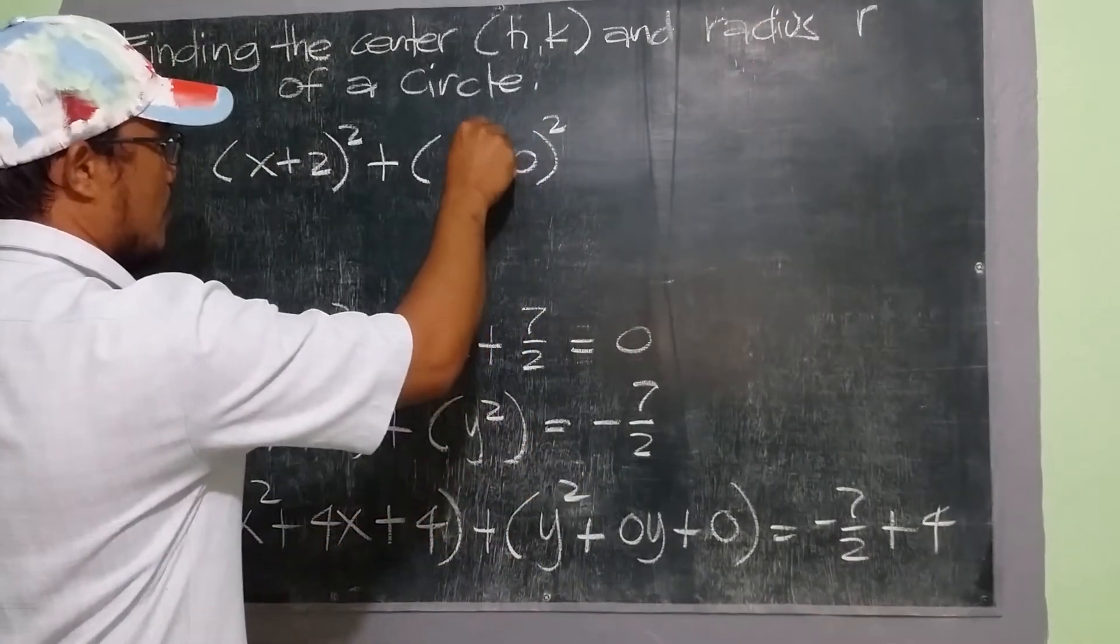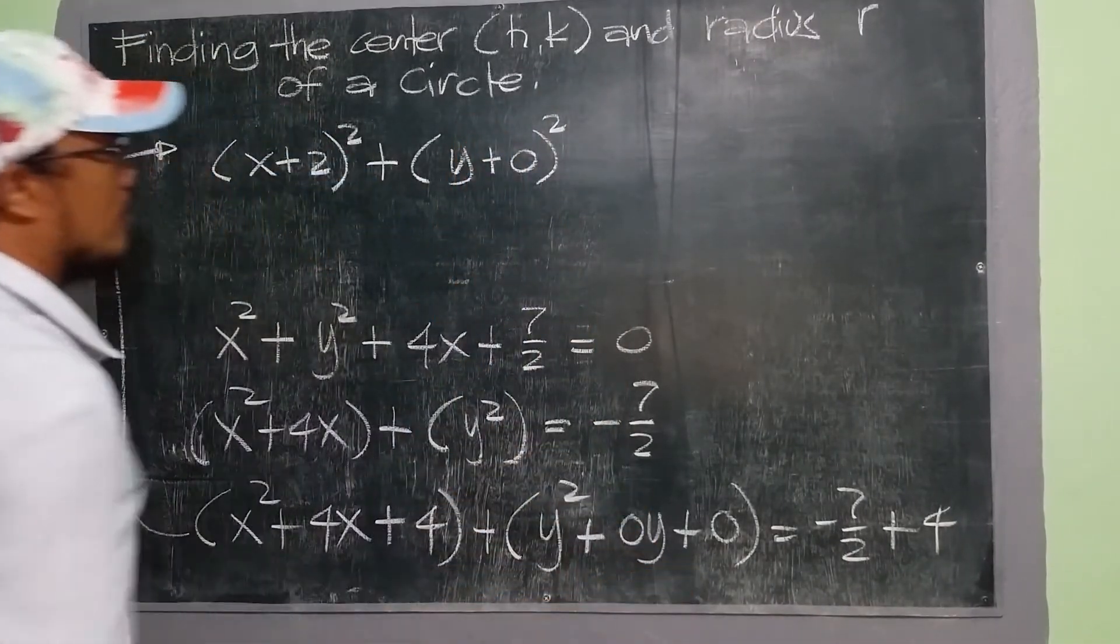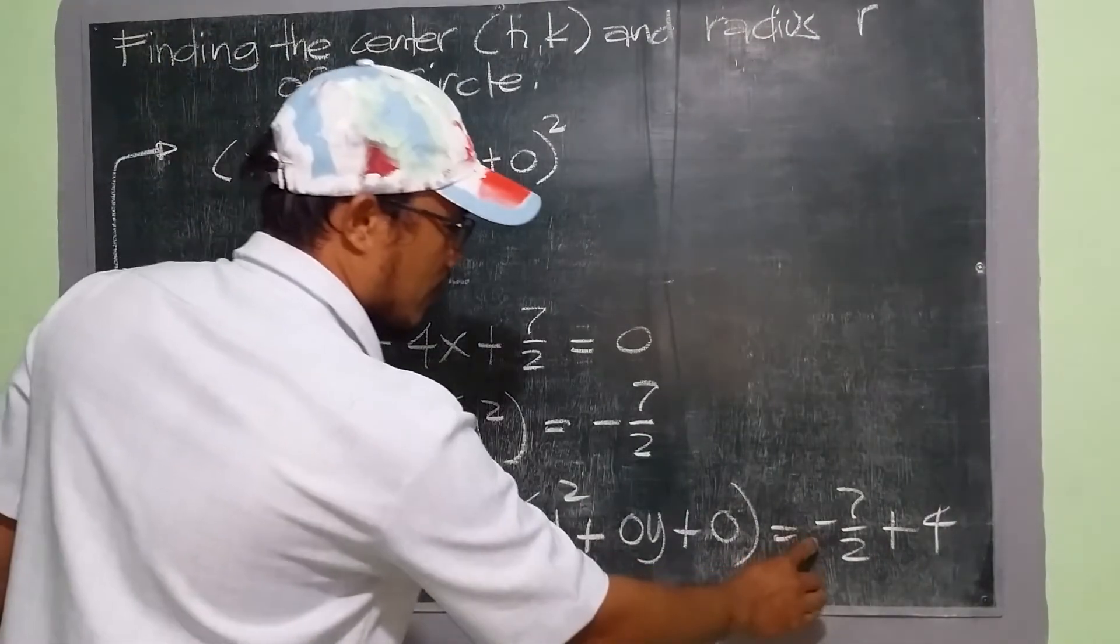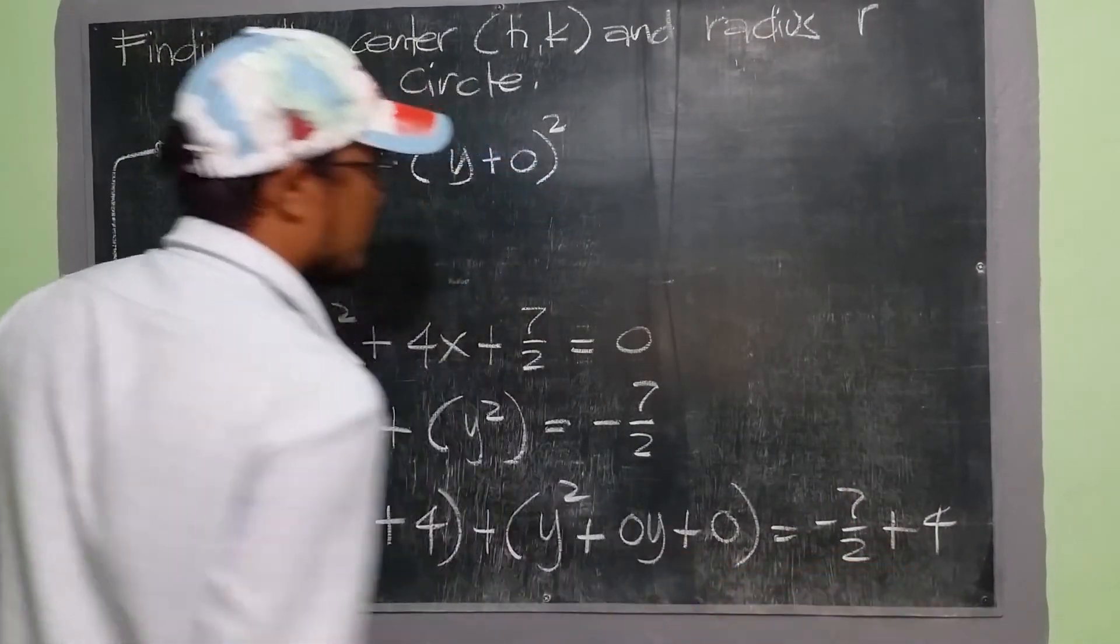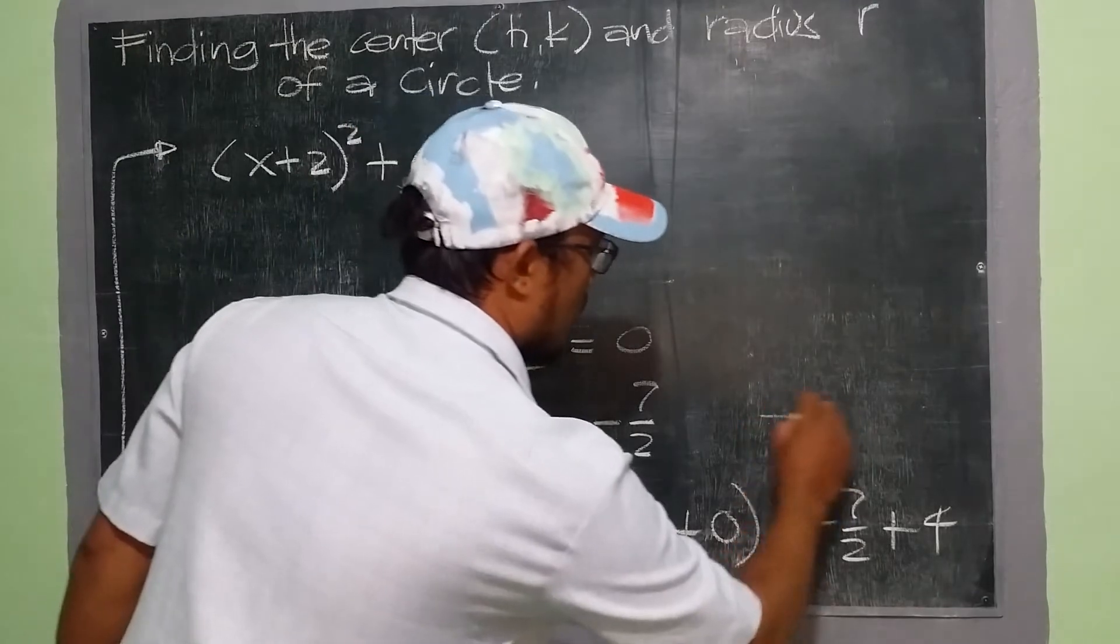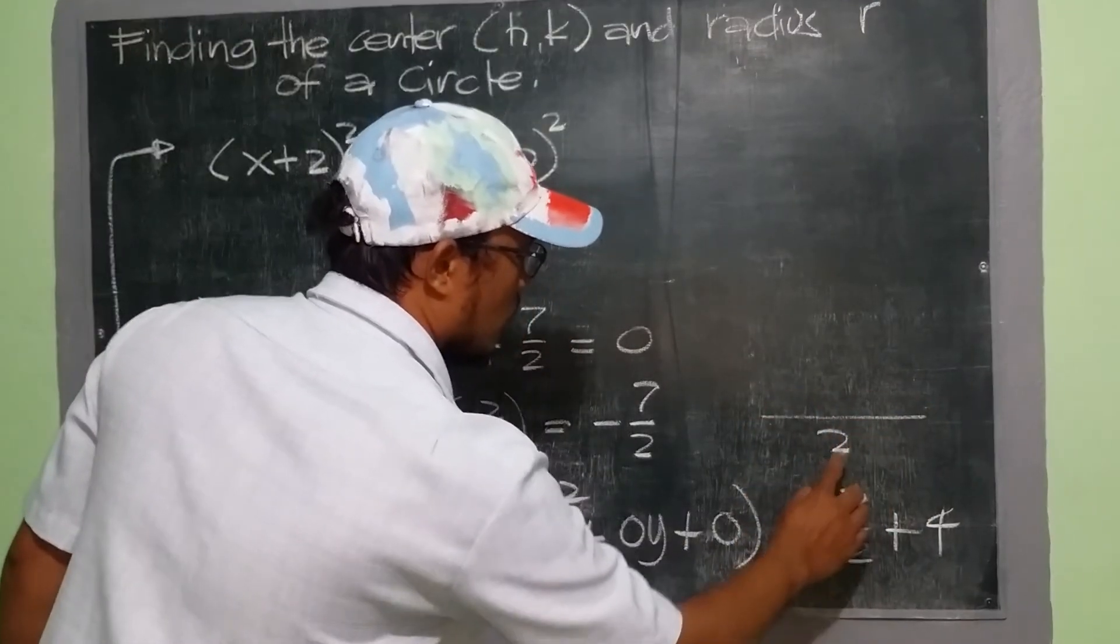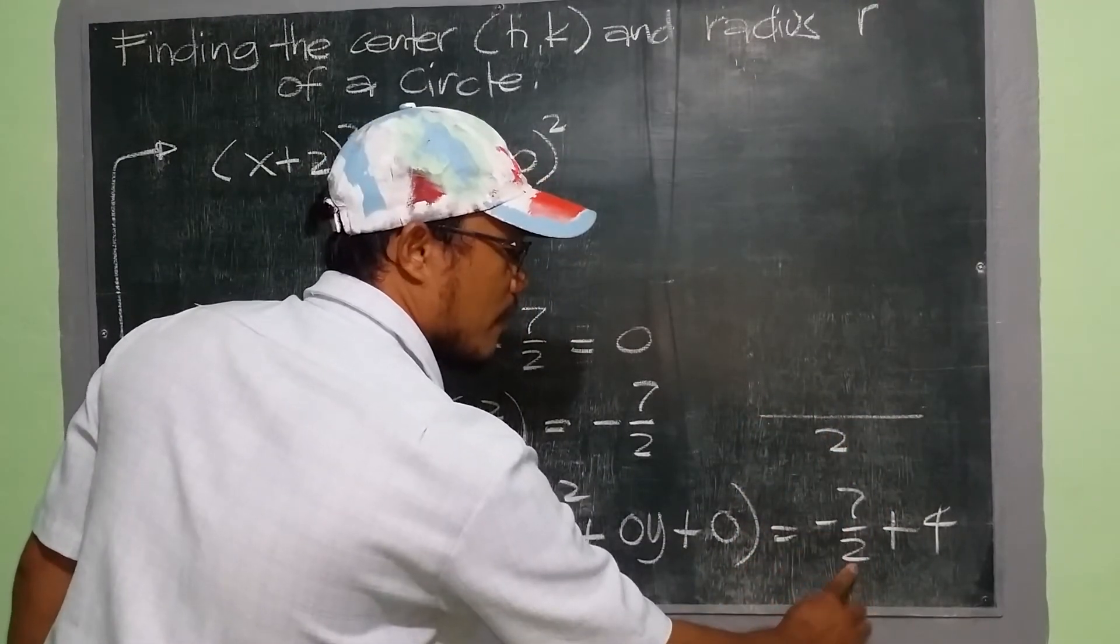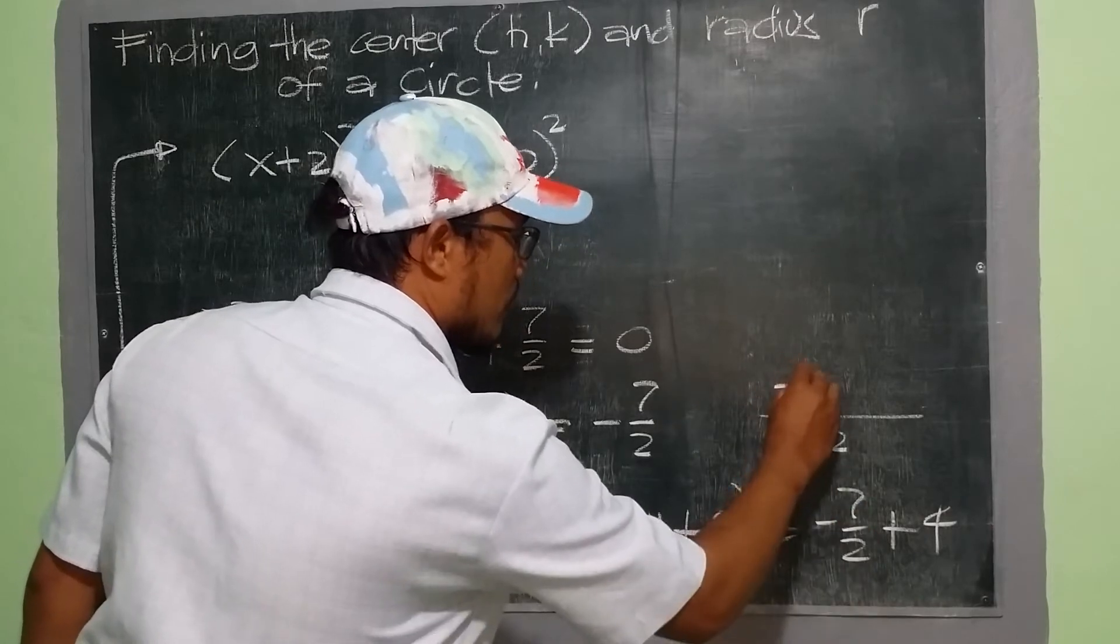Or we don't have plus yet, since we all use plus. And then negative 7 over 2 plus 4, we have our LCD, which is 2. 2 divided by 2 is 1, times negative 7, we have negative 7.